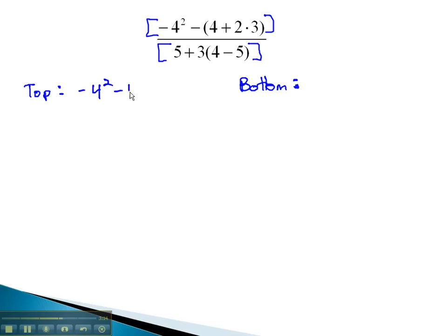The top is negative 4 squared, minus 4 plus 2 times 3. Inside the parentheses first, we'll multiply, giving us negative 4 squared, minus 4 plus 6. Still working the parentheses, so we get negative 4 squared, minus 4 plus 6 is 10.